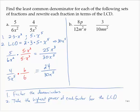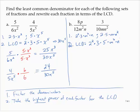Similarly for the second exercise: 12m squared n — 12 is 2 times 2 times 2 times 3, so that's 2 squared times 3 times m squared times n. And 10mn squared is 2 times 5 times m times n squared. So the LCD uses 2 squared, 3, 5, m squared, and n squared.